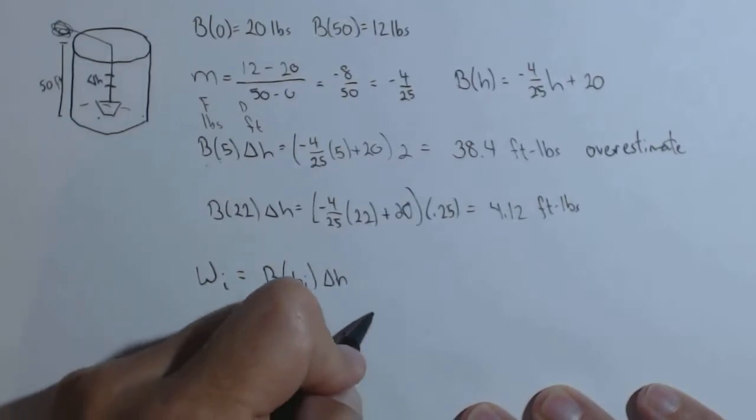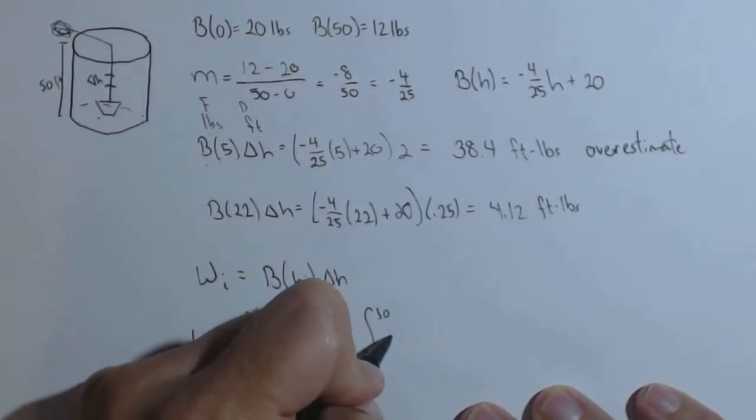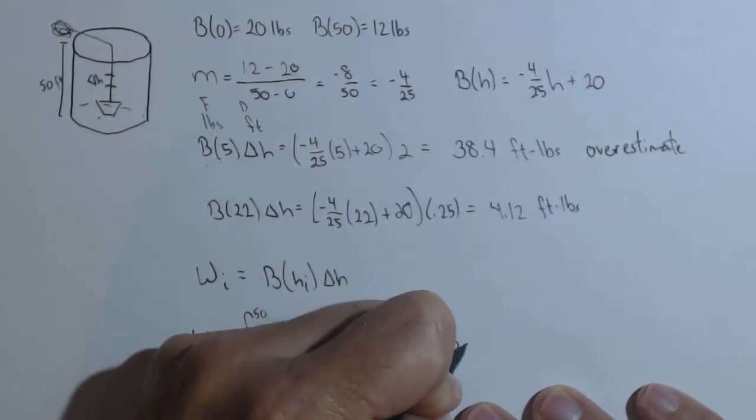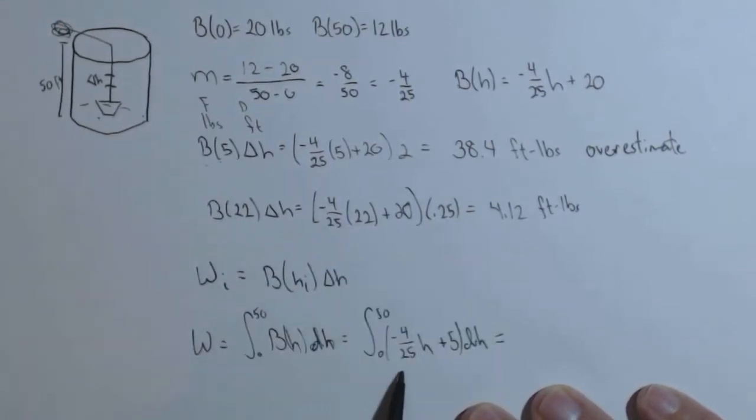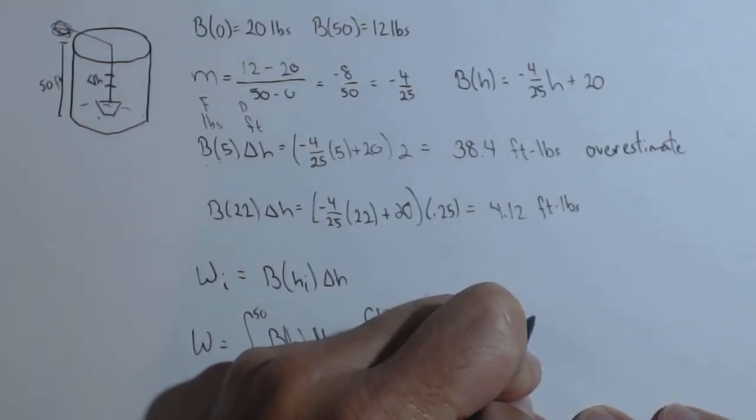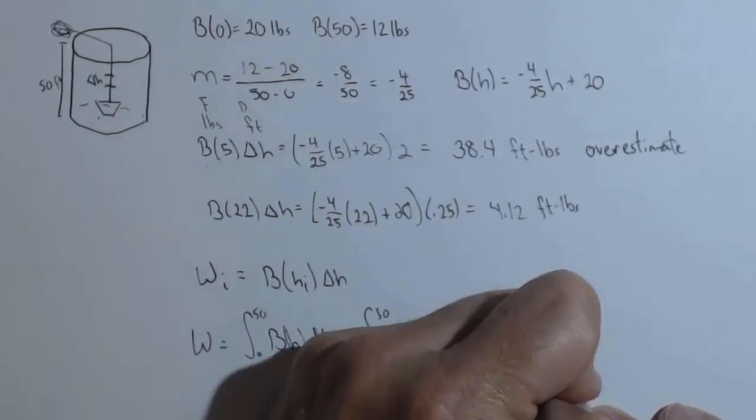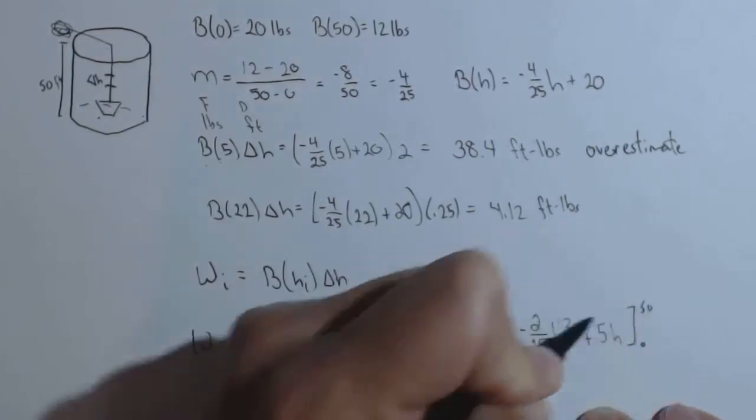So let's calculate this real quick and get the total work. So 0 to 50 of negative 4 over 25 h plus 20 dh. The anti-derivative here, this is h squared over 2. I'm going to cancel that out here, so I'm going to write that as negative 2 over 25 h squared plus 20h from 0 to 50.